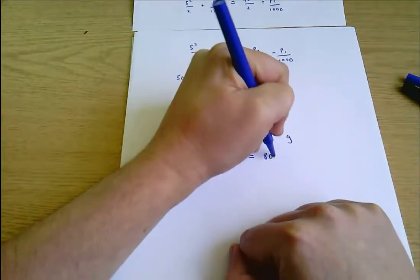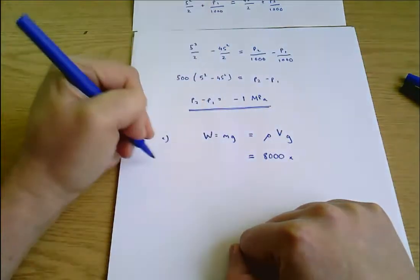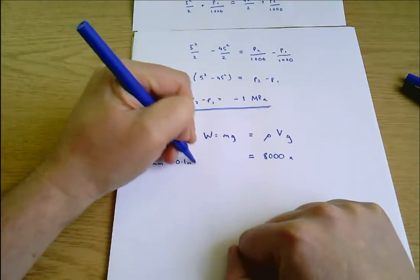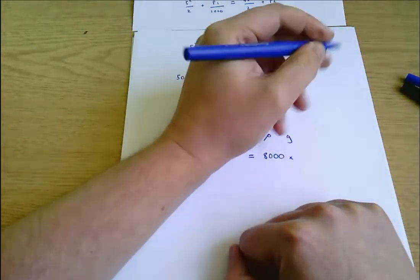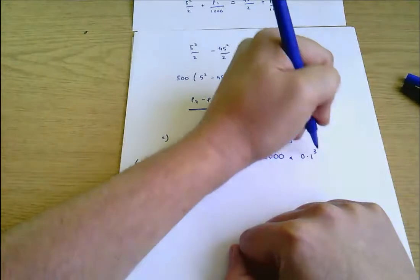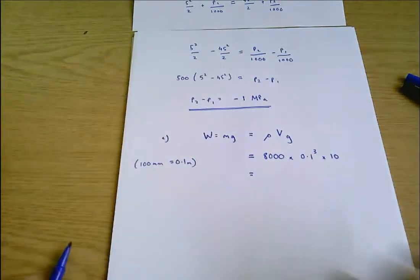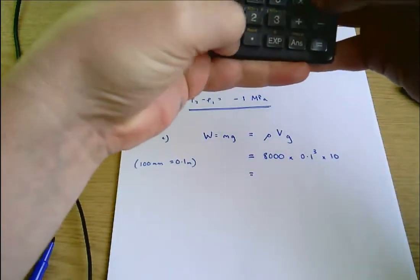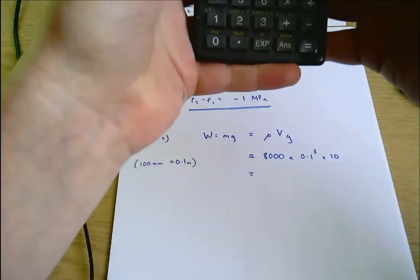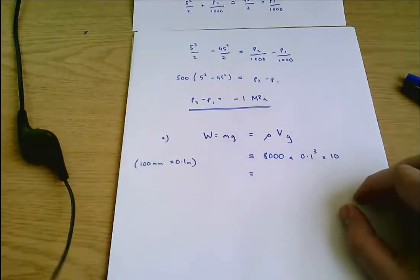And we've got all that information for the cube. Its density is 8000. That's in the question. Its volume, it's a cube with side 100 millimeters. I'll just make a note. 100 millimeters equals 0.1 meters. Check that conversion if you're not quite sure about it. So that's times 0.1 cubed times 10. We're told to use 10 for gravity and that'll be fine. Equals 8000 times 0.1 cubed times 10 is 80 newtons.